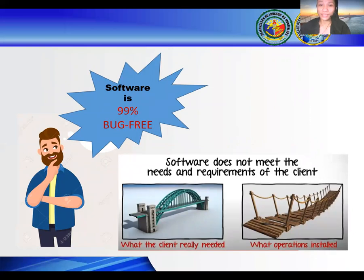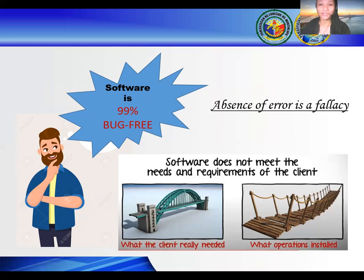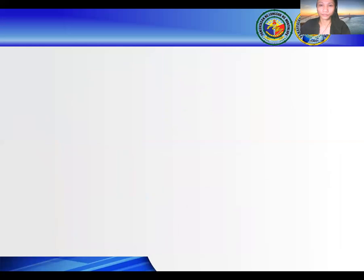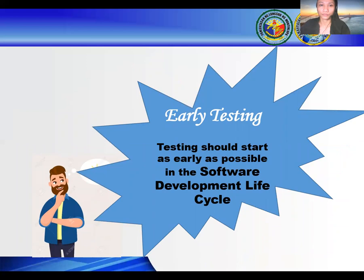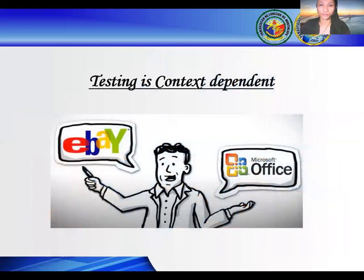But what if you work extra hard, taking all precautions and making sure your software product is 99% bug-free, and the software still does not meet the needs and requirements of the clients? This leads us to our next principle, which states the absence of error is a fallacy. Finding and fixing defects does not help if the build is unusable and does not fulfill the user's needs and requirements. The next principle is that testing is context-dependent, which basically means that the way you test an e-commerce site will be different from the way you test a commercial application.